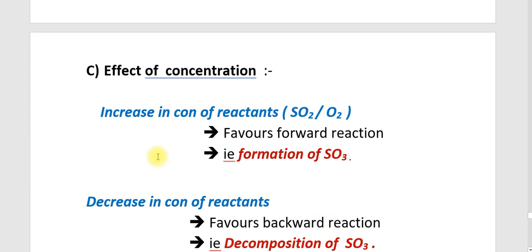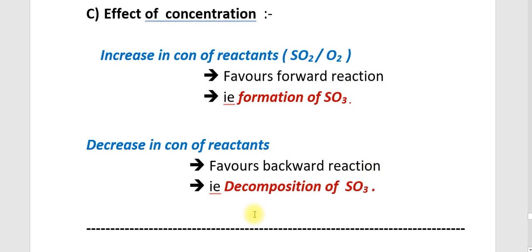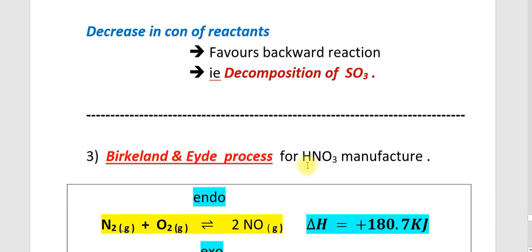Next is the effect of concentration. An increase in concentration of reactants SO2 or O2 favours the forward reaction — the formation of SO3 will take place. A decrease in concentration of reactants favours the backward reaction, that is decomposition of SO3. If we remove the SO3 that is formed, we are decreasing the concentration of the product; therefore, the forward reaction will take place and more SO3 will form.